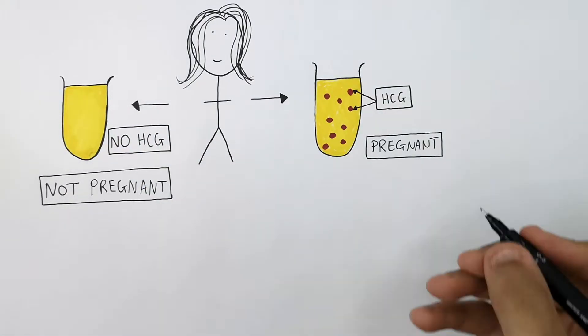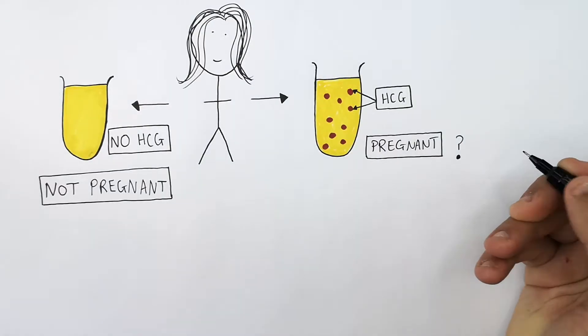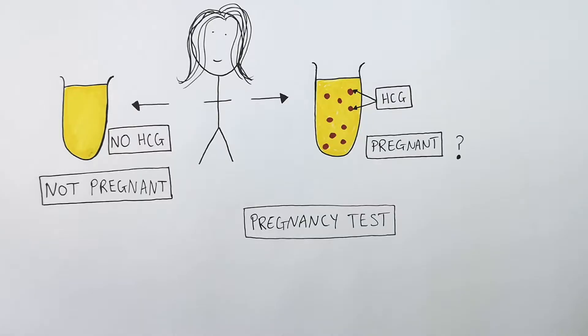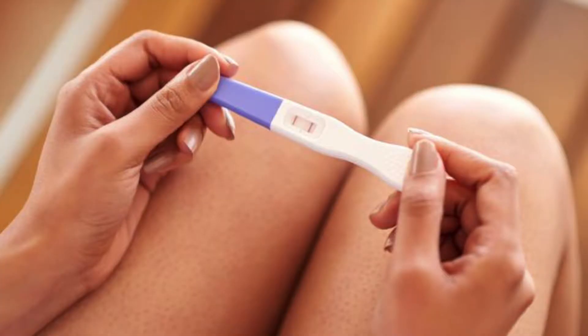So how can she tell if she is pregnant? Well, she's going to use a pregnancy test which you urinate on, and that's going to utilise the HCG that is in the urine and tell her whether or not she's pregnant. This here is what a pregnancy test looks like in real life.